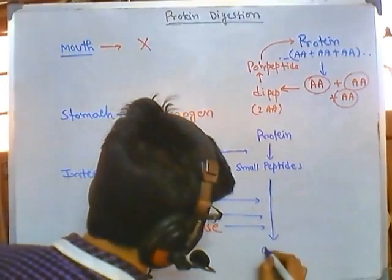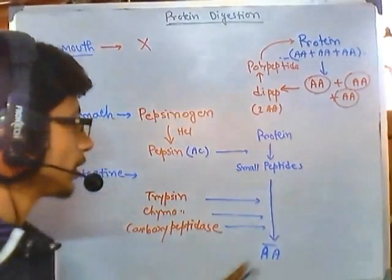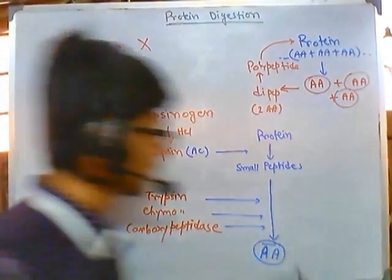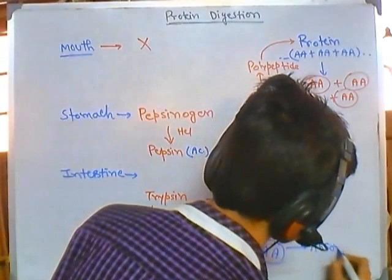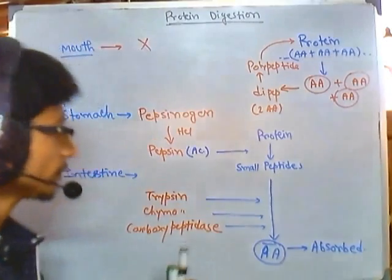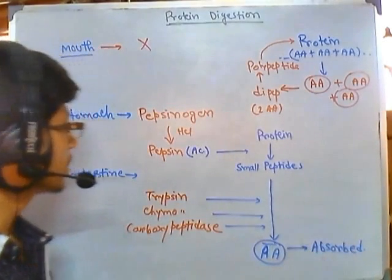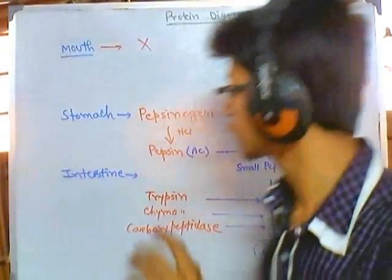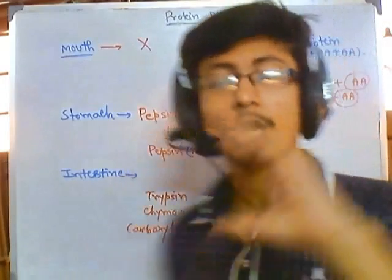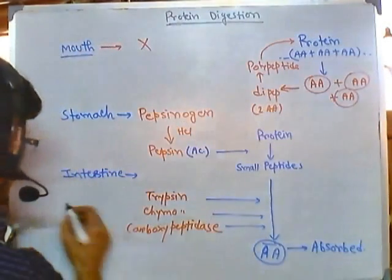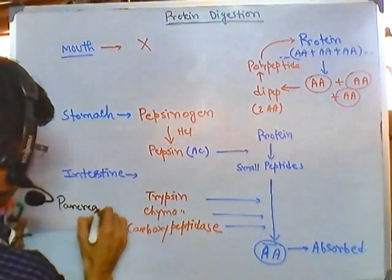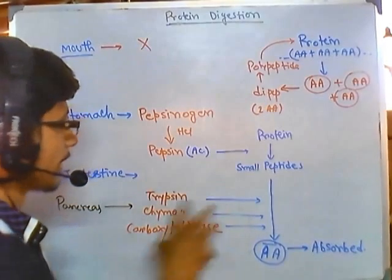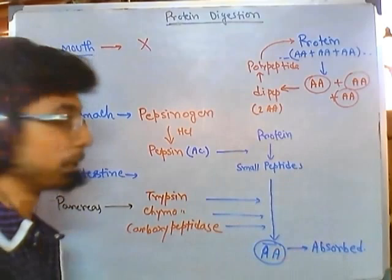These pancreatic enzymes produce amino acid molecules — the simplest form — so no further digestion is needed, and the amino acids are easily absorbed. Most of the protein digestion takes place in the intestine through secretions from the pancreas. Pancreatic trypsin, chymotrypsin, and carboxypeptidase act on small peptides to produce amino acids.